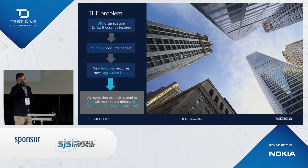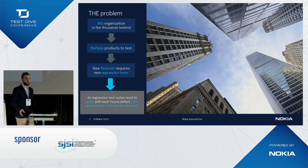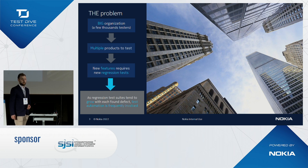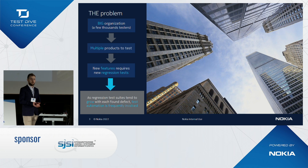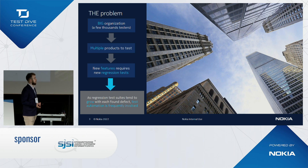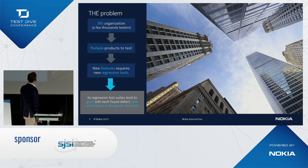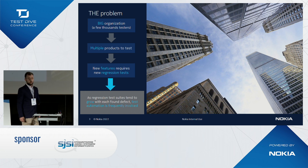Nokia, to maintain its position in the market, creates multiple products. Since customers have different needs, different products are designed and created, so a different scope of testing is required to maintain overall quality. From a regression testing perspective, most of the regression testing is the same for each product, with only slight and small differences between each product.